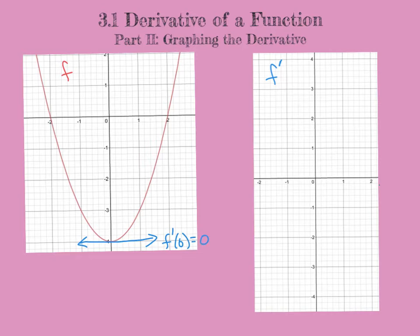We know that the derivative when x is 0 is 0. The x values are the same, but the y values of f prime are what the derivative is at that point. We first want to locate any turnaround points — mins or maxes — because they have horizontal tangent lines. The slope of the tangent line is the derivative.